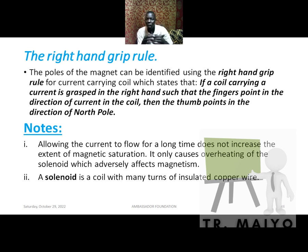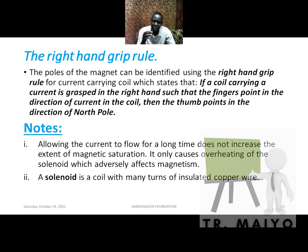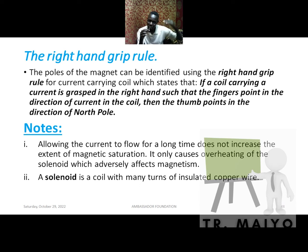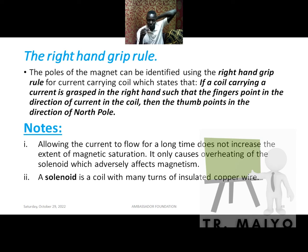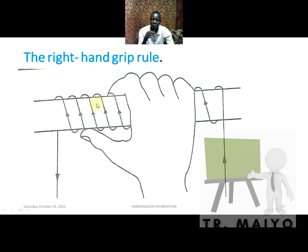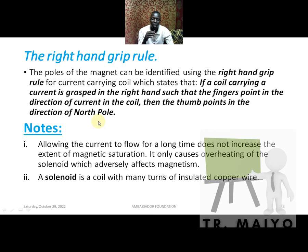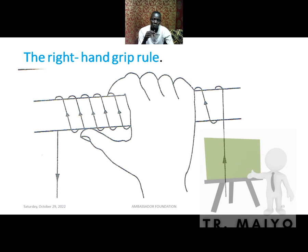Use the correct hand — using the wrong hand gives opposite results. Later we will also use our left hand, so you need to know when to use each. Note: allowing current to flow for a long time does not increase magnetic saturation; it only causes overheating of the solenoid, which adversely affects magnetism. After magnetic saturation is reached, adding more current does nothing. A solenoid is a coil with many turns of insulated copper wire.